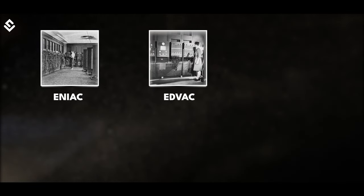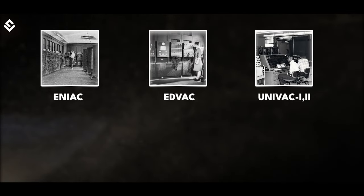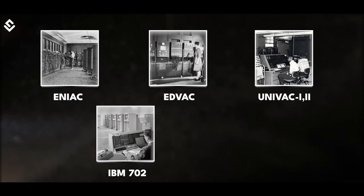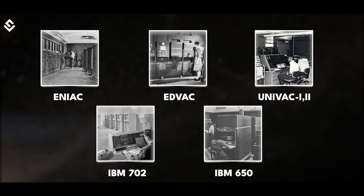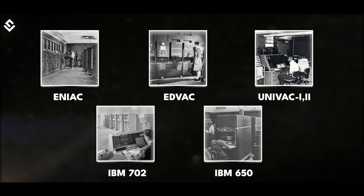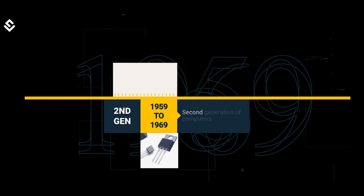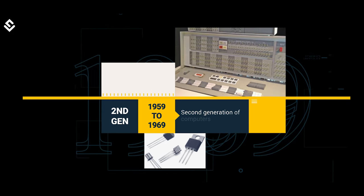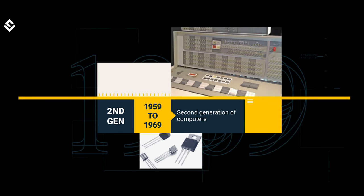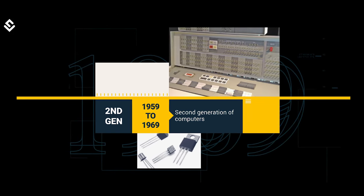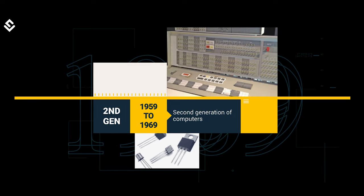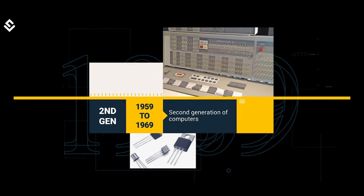ENIAC, EDVAC, UNIVAC 1 and 2, IBM 702, and IBM 650 were some famous computers of the first generation. The second generation computers, from 1959 to 1969, used semiconductor digital elements and were faster and more reliable than the first generation.